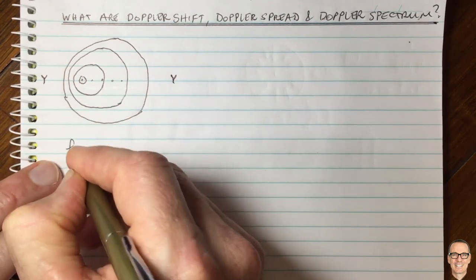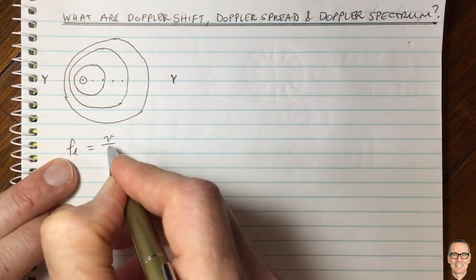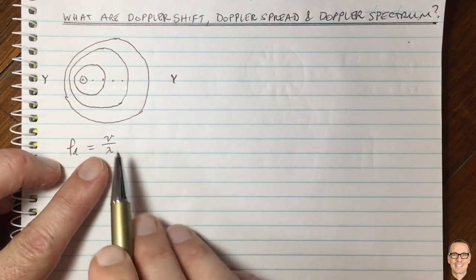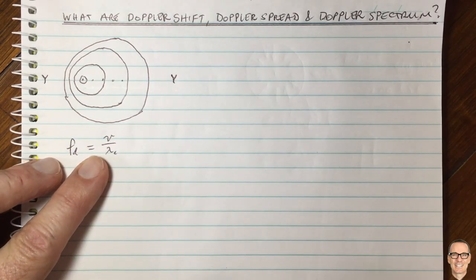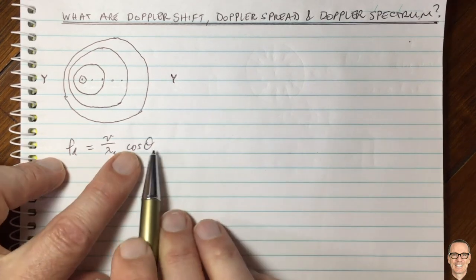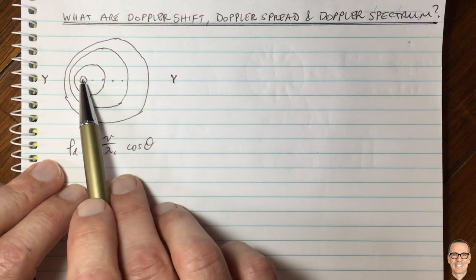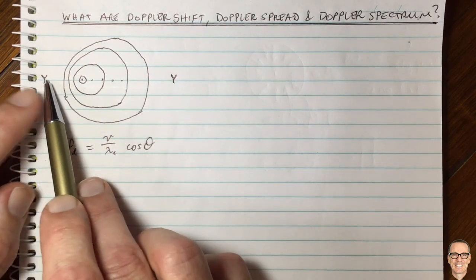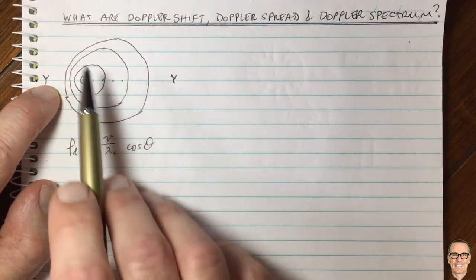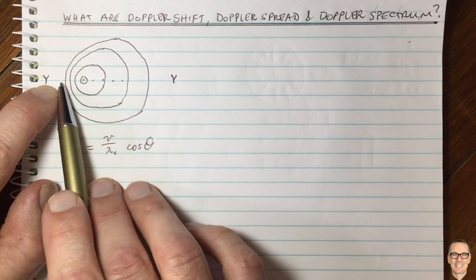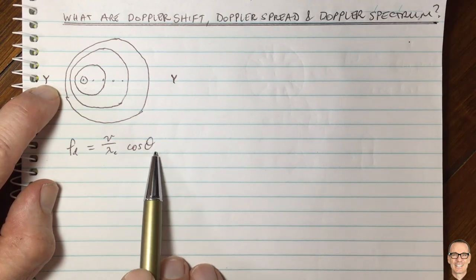The amount it shifts, we often call fd, and that equals v divided by λc — the carrier wavelength — times cos(θ), where v is the vehicle speed. θ is the angle you are relative to the direction of travel. You could be receiving at any angle, and then you wouldn't get the maximum shift either up or down — you would get another shift related to that angle, but not the maximum.